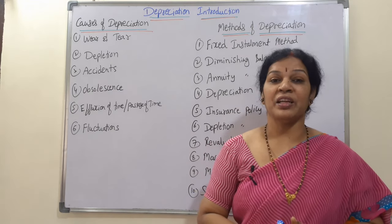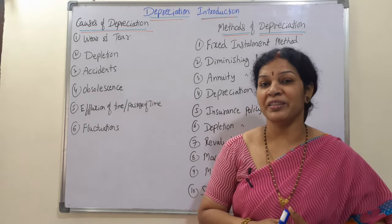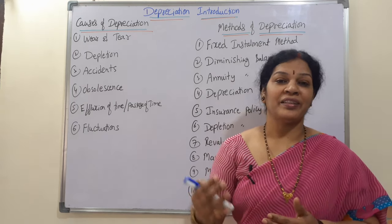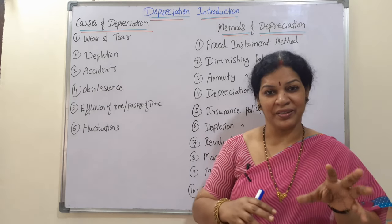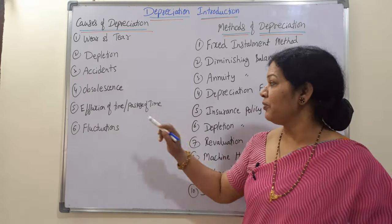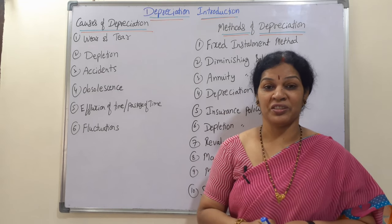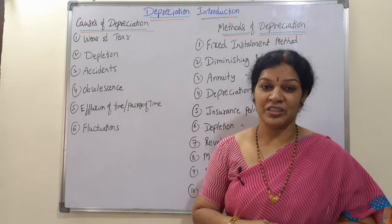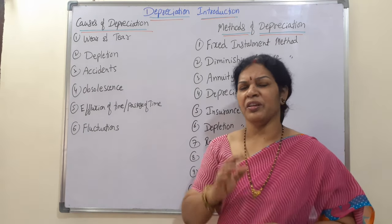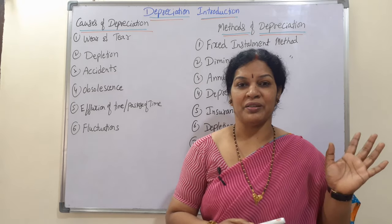Another cause is effluxion of time, or passage of time. As time passes, an asset becomes outdated. A best example is patents and copyrights — in the beginning their value is high, but as competition increases the value decreases. The last cause is market fluctuations — market value keeps increasing or decreasing, and the asset's efficiency will always be declining.